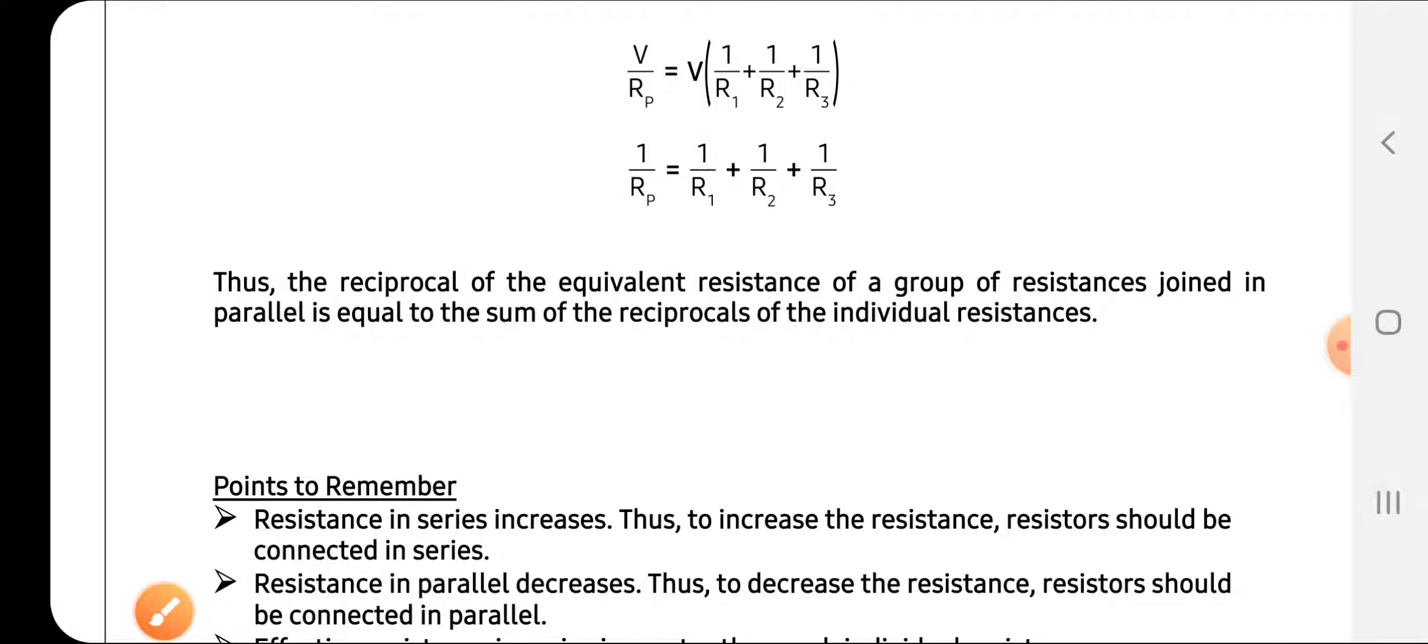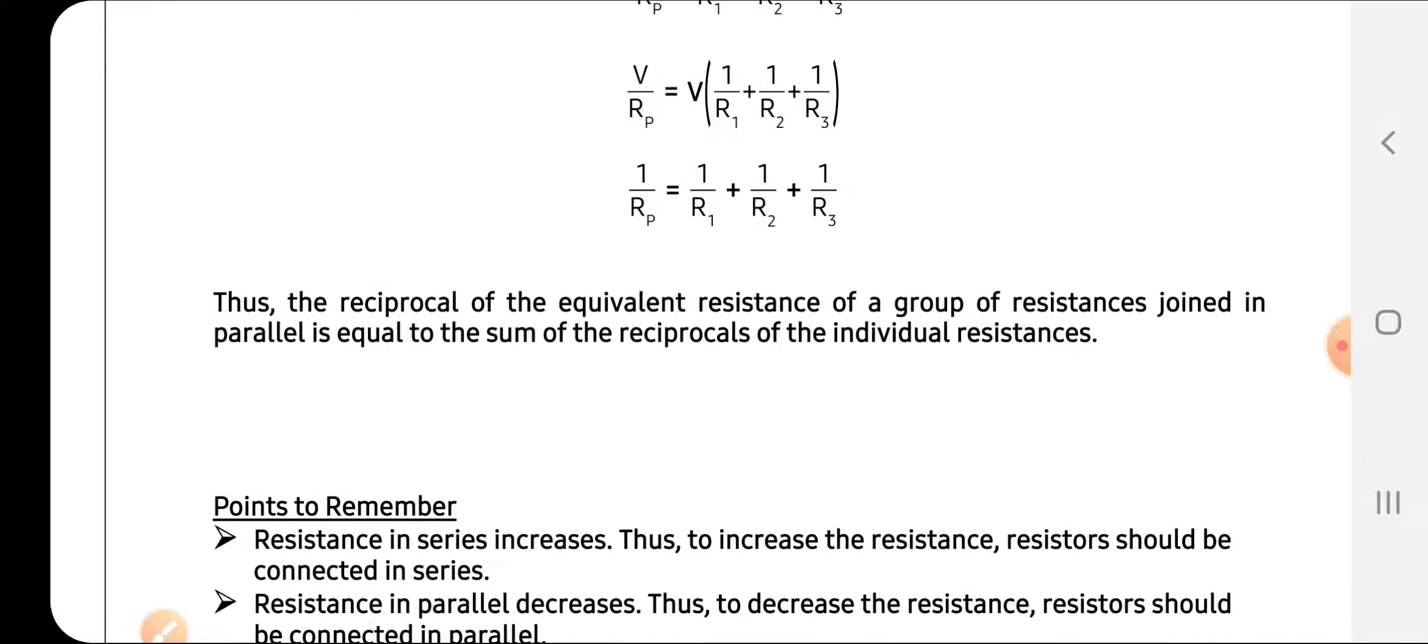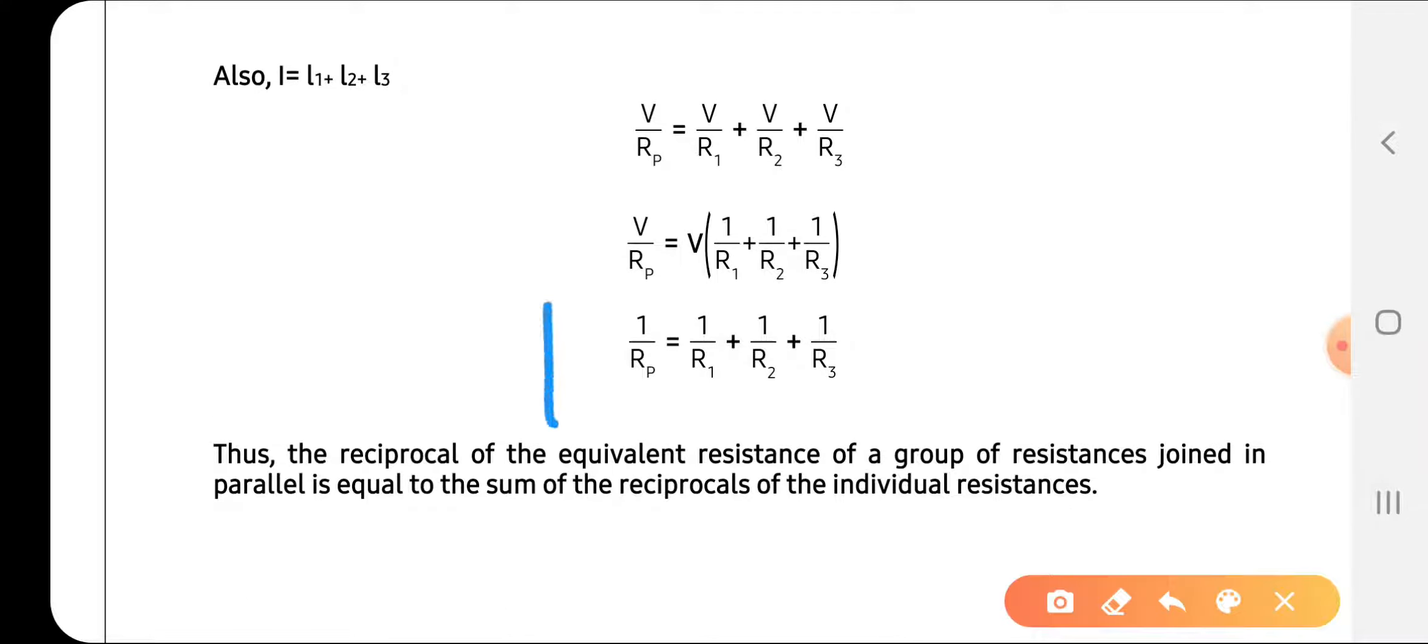Thus, the reciprocal of the equivalent resistance of the group of resistances joined in parallel is equal to the sum of reciprocals. That is why the total resistance is in reciprocal form.